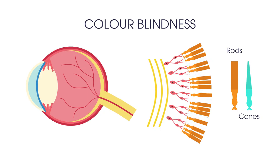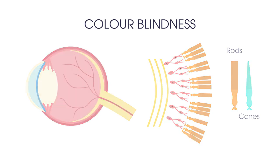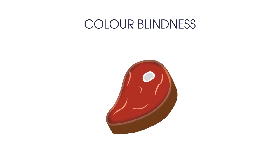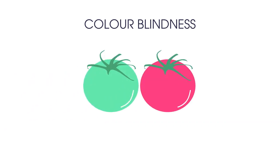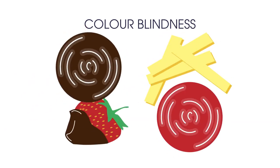Colour blindness can cause people difficulty in everyday life. Most red green colour blind people won't know if they've cooked a piece of meat rare or well done and they're unlikely to be able to tell the difference between green and ripe tomatoes or between ketchup and chocolate sauce.